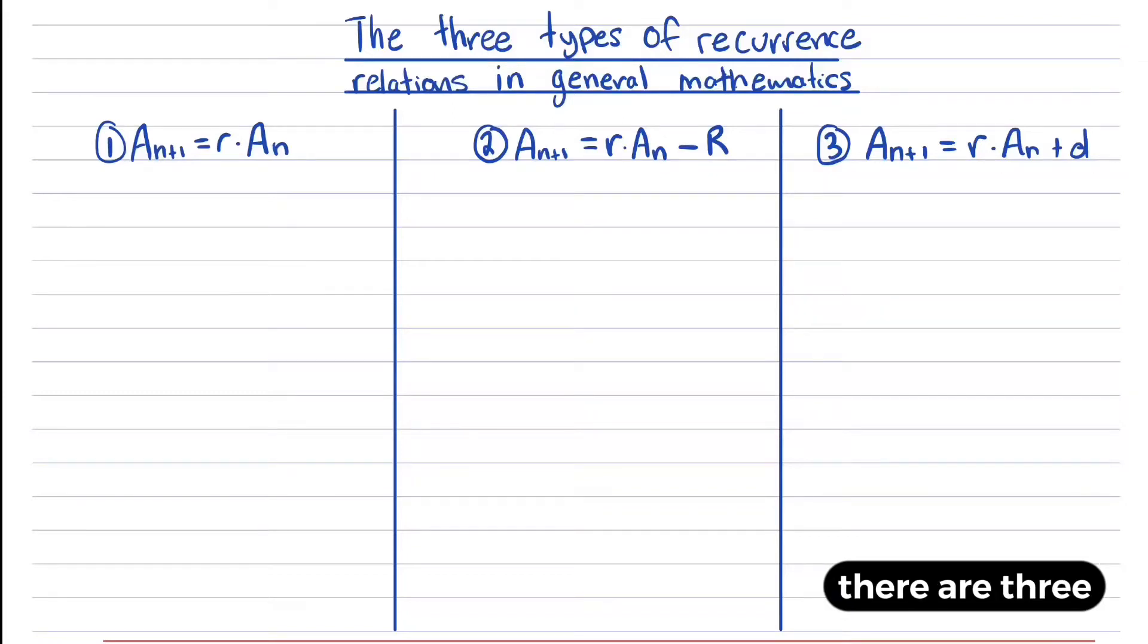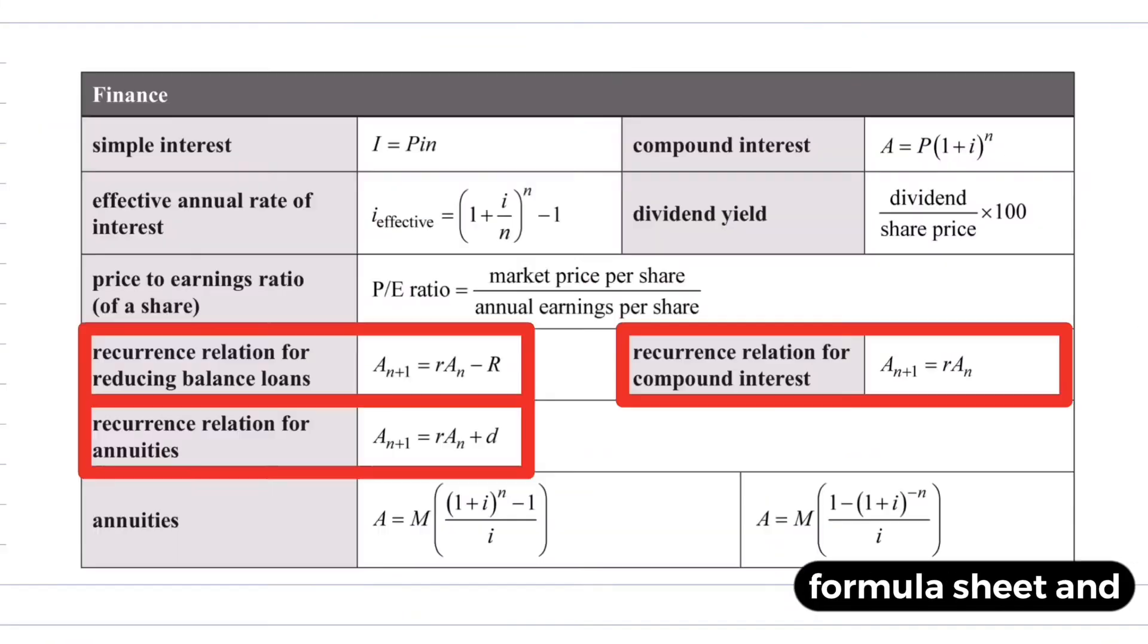In general maths, there are three types of recurrence relations that you need to be aware of. These can be found on the formula sheet, and in this video we're going to briefly unpack what each of these mean and where we could use them in a real world context.